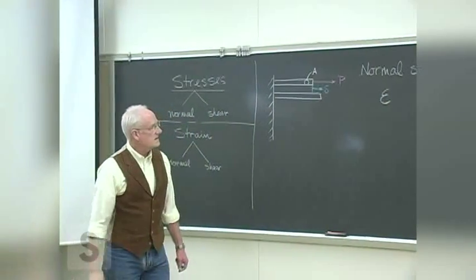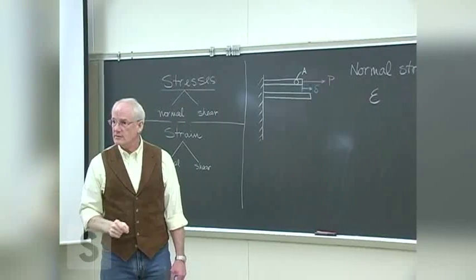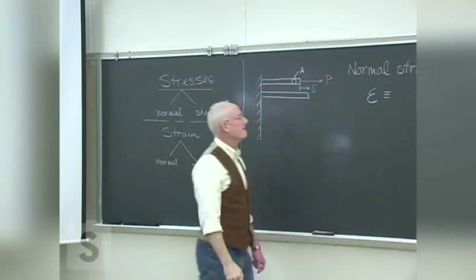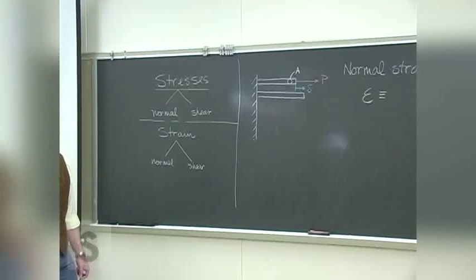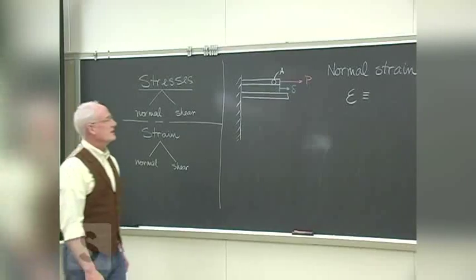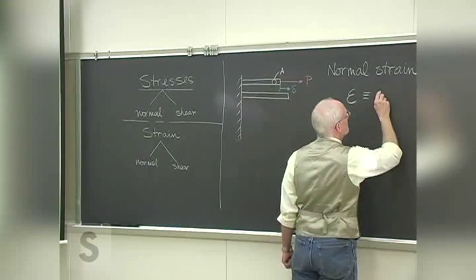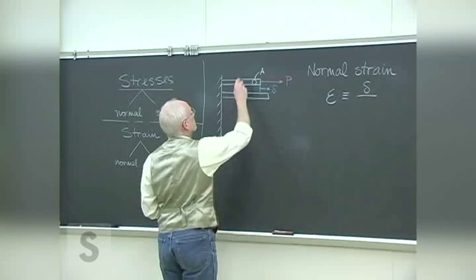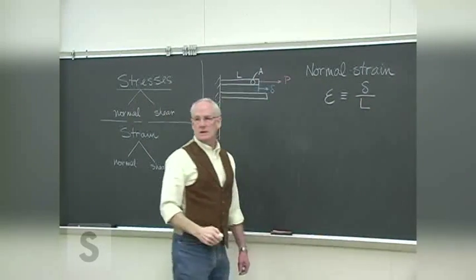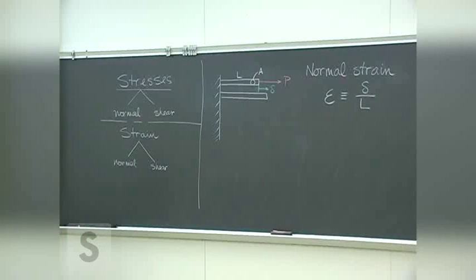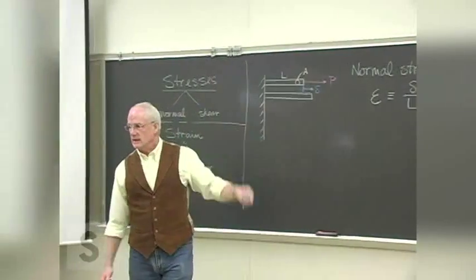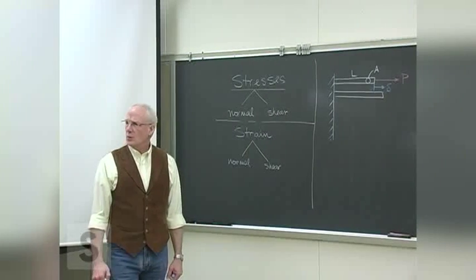Our symbol is epsilon. Our definition of the normal strain epsilon is simply that amount of elastic deformation divided by the original length of the piece. Simple as that. Load a piece, measure how much it deformed, you can calculate then the normal strain on the piece. What are the units?